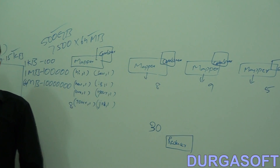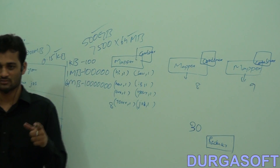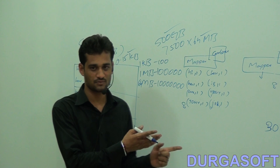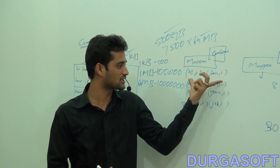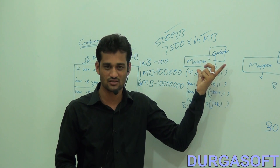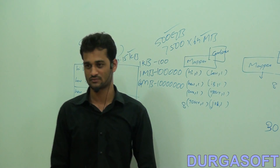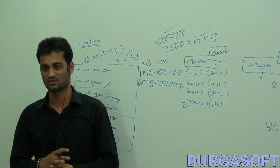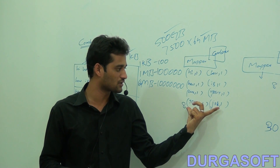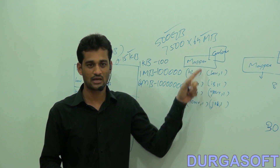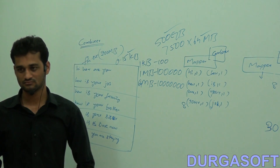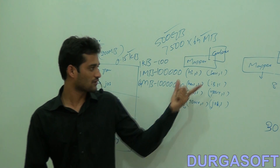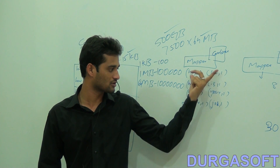The combiner is similar to a mini reducer. The reducer's responsibility is combining all mapper output key-value pairs, performing shuffling and sorting, and giving output. The combiner does the same — it takes its individual mapper output key-value pairs, performs shuffling and sorting on those, and gives some output. We write the same code in the combiner as in the reducer, which is why we call it a mini reducer.